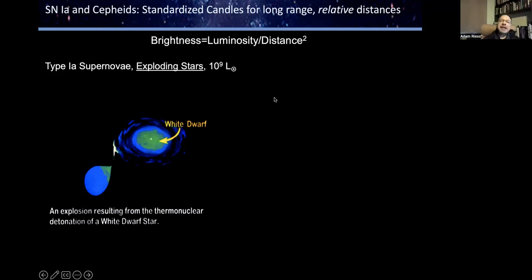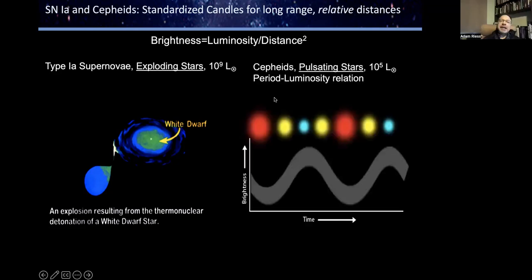The other most-used standard candle is Cepheid variables. These are pulsating supergiant stars that are hundreds of thousands of solar luminosities. There's a very tight relationship between the period of their pulsation and their luminosity, because more massive stars have greater luminosities but take longer to complete an oscillation. They oscillate because they overshoot their hydrostatic equilibrium point due to an opacity mechanism in their atmosphere.